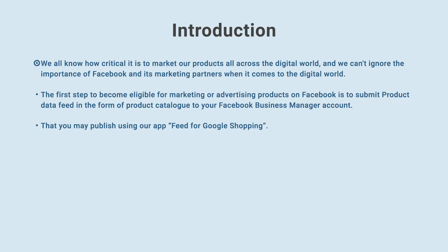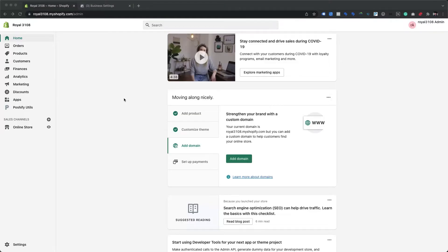We all know how critical it is to market our products across the digital world, and we can't ignore the importance of Facebook and its marketing partners. The first step to become eligible for marketing or advertising products on Facebook is to submit a product data feed in the form of a product catalog to your Facebook Business Manager account, which you may publish using our app, Feed for Google Shopping.